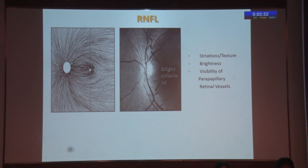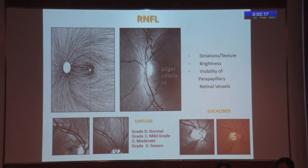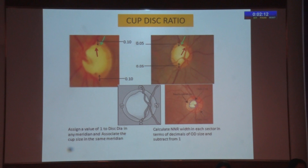Coming to the RNFL — there's a lot of talk about RNFL in OCTs — but as you evaluate the disc, it is probably one of the surest ways to assess. If you see it in red-free light, you'll see those bright silver striations. You can grade it as mild, moderate, or severe. There is diffuse and localized RNFL thinning as well.